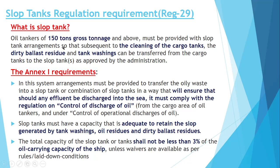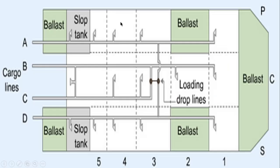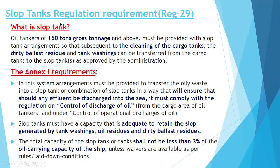All tankers of 150 GT and above should have a slop tank. The slop tank is provided in a ship mainly for collection of the cleaning residues of cargo tanks — dirty ballast residue and tank washing water. All these things are transferred to a tank which is called the slop tank.